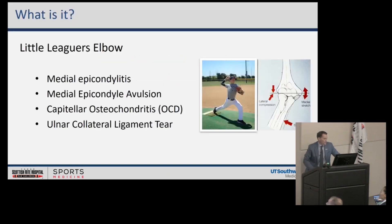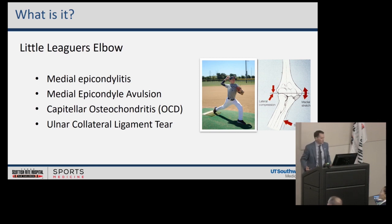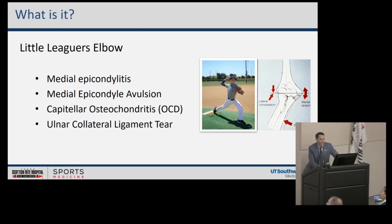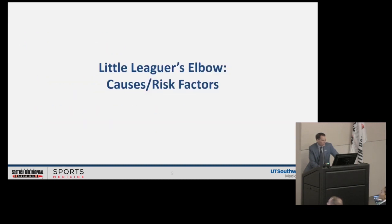The term little leaguer's elbow really encompasses pathology on the medial and lateral aspects: medial epicondylitis, epicondylar avulsion, capitellar OCD, or ulnar collateral ligament tears. They kind of occur in that order temporally, and you can see the stress pattern that occurs on the elbow with throwing.